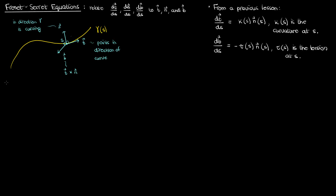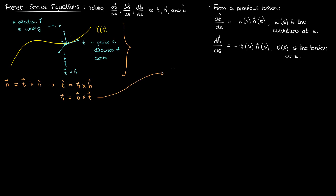Now these two equations constitute two of the Frenet-Serret equations. Let's get the third. We know that the binormal vector is the cross product of t and n. Given this cross product and a right-handed system, we can write two other cross product relationships: the tangent equals the cross product of n and b, and the normal vector equals the cross product of b and t. You can verify these using the right-hand rule. Let's take this third relationship — n equals b cross t — and take the derivative of both sides with respect to s.